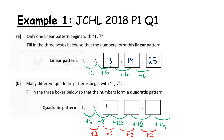So we get 7 plus 8 is 15, 15 plus 10 is 25, 25 plus 12 is 37. That's only one possible quadratic pattern. You could use a common second difference of plus 1, plus 3, plus 4, or whatever you want, as long as that piece is common. The first difference is what's changing.